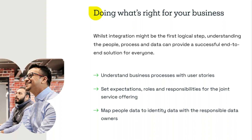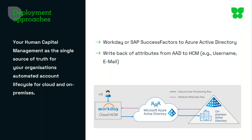There are different deployment approaches. In this example we have Workday as the HR source and an on-prem Active Directory. Data from HR that we've allowed to flow will pass through Azure AD as the connector and then be provisioned into AD on-prem. The writeback flow works as follows: first, AD Connect pushes the users into Azure AD, and then Azure AD can write attributes back into your HR system — such as email address, phone number, or any other attributes you want to use — keeping your Workday system up to date.